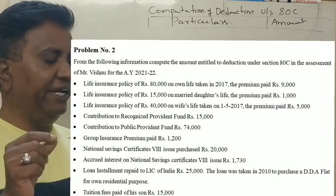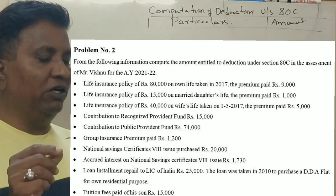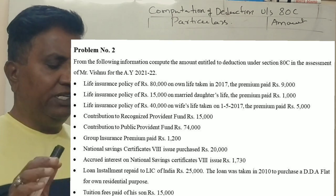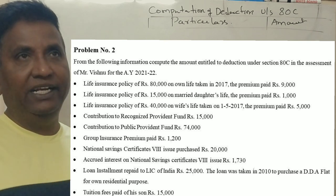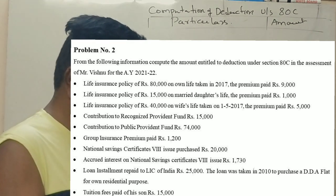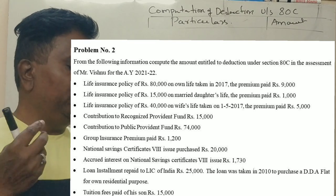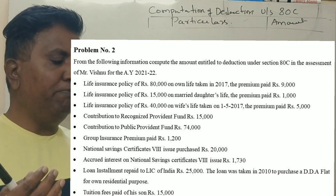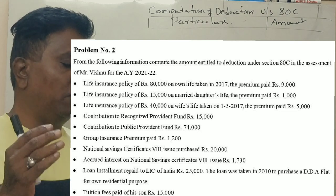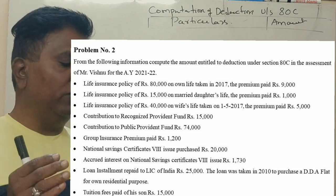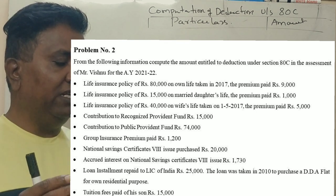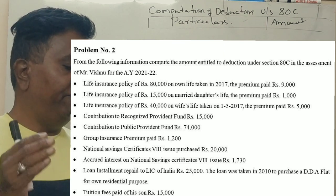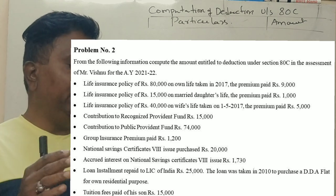Life insurance policy of 80,000 on own life taken in 2017, the premium paid rupees 9,000. Life insurance policy of Rs. 15,000 on married daughter's life, the premium paid is 1,000. Life insurance policy of Rs. 40,000 on wife's life taken on 1-5-2017, the premium paid is 5,000. The contribution to Recognized Provident Fund, 15,000. Contribution to Public Provident Fund, 74,000.